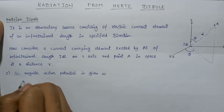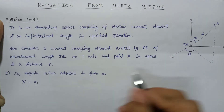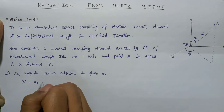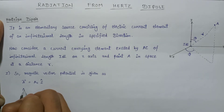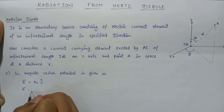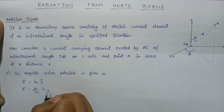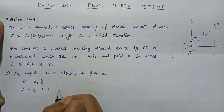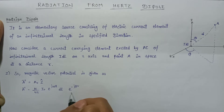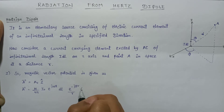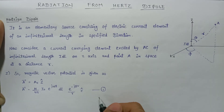The magnetic vector potential A vector is oriented in the z direction with a unit vector z-cap. The value of the magnetic vector potential A vector equals mu over 4 pi, times I-naught, times e to the power j-omega-t, times e to the power minus j-beta-r, over r, multiplied by the unit vector z-cap. Let this be equation number one.